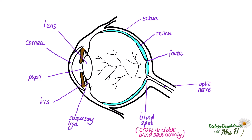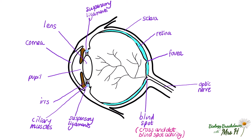These are suspensory ligaments that are attached to the lens with the ciliary muscles. They control the thickness of the lens and therefore the degree at which the light is refracted. You also have a fluid called aqueous humour that is found inside the eyeball.